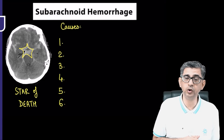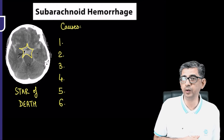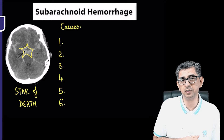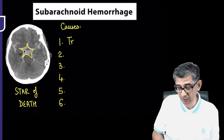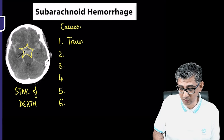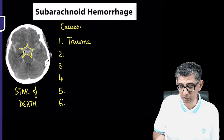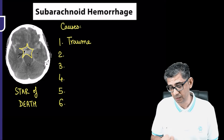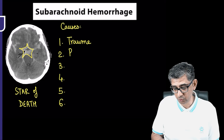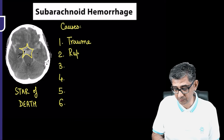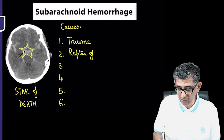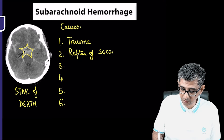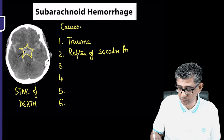Let's look at the causes behind this catastrophic condition with up to 35% mortality prior to hospitalization. The number one cause would be trauma. After that, the answer would be rupture of a berry aneurysm — in some MCQs you might also write 'saccular aneurysm.'